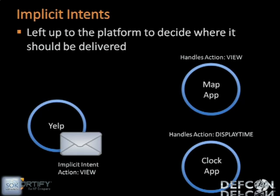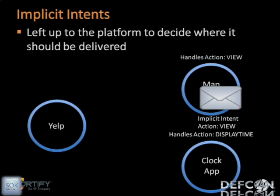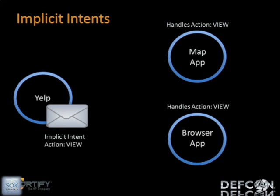Actions should specify what the receiving component should do. Some common actions include the view action and the edit action, but really the action can be any string created by the developer. Going back to the Yelp application, they could send an implicit intent with the view action. The system will then look at receiving components and determine which can handle that action. If there's only one component that can handle it, the system will deliver the intent to that map application. If there are more than one, depending on the type of request, either the user will be prompted to choose, the system might decide, or the system will deliver it to all possible recipients.